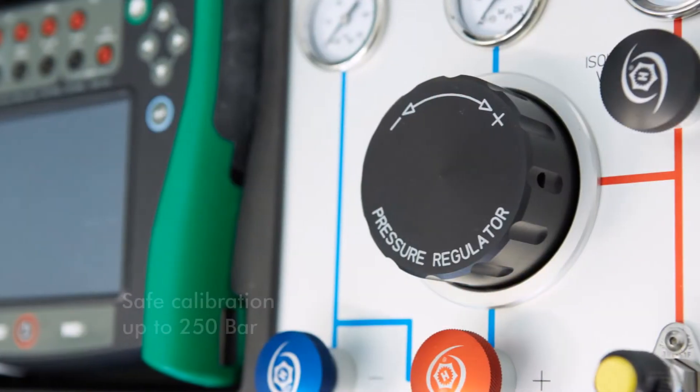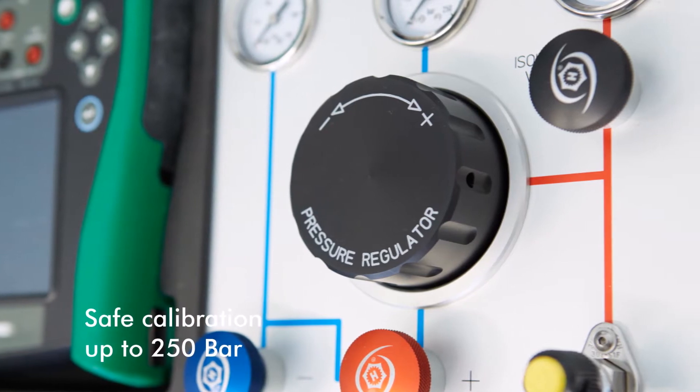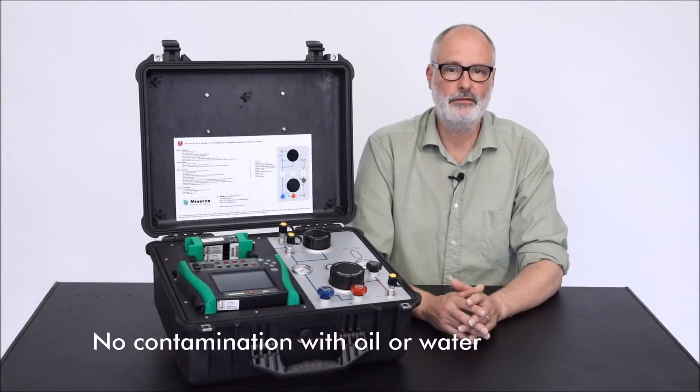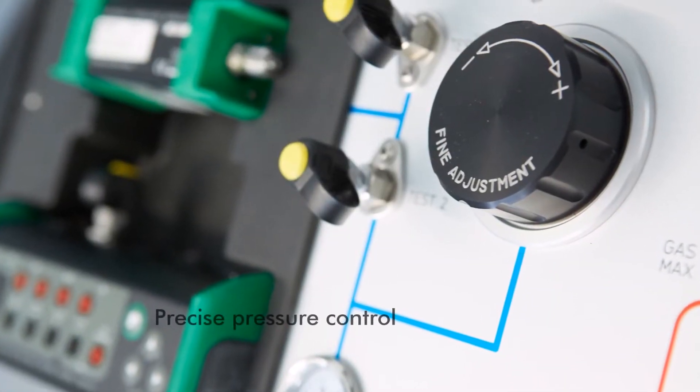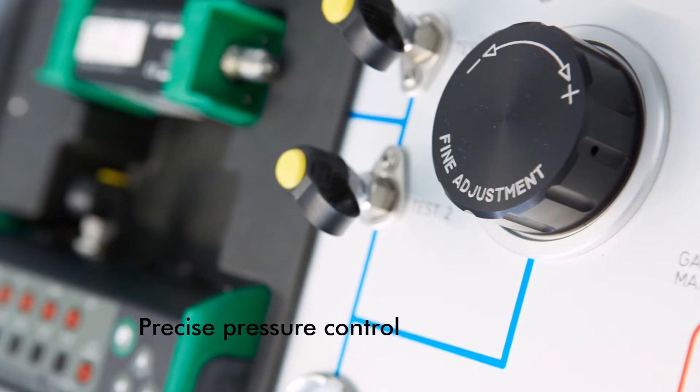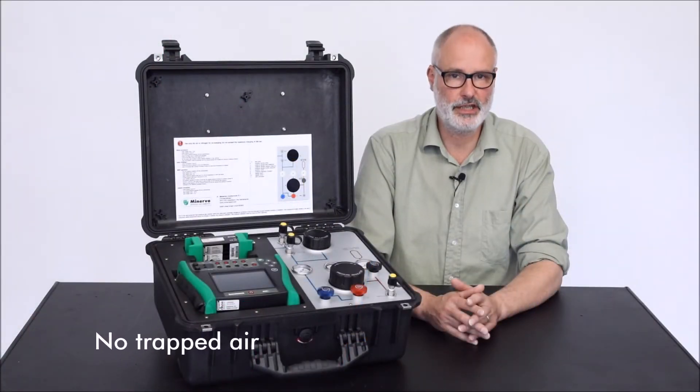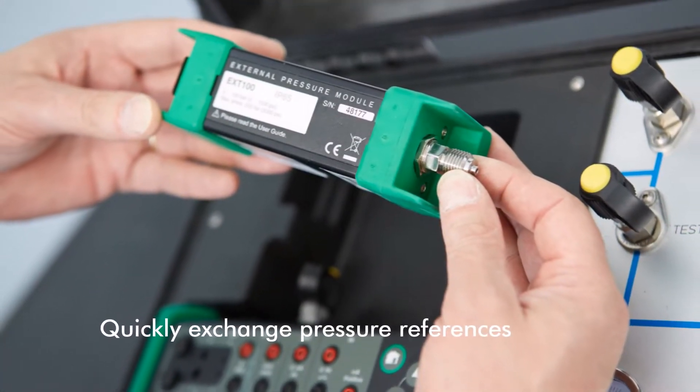It enables you to perform safe pneumatic calibrations up to a maximum pressure of 250 bar, not contaminate the device under test with oil or water, perform precise test pressure control using a pressure balance volume adjuster, eliminate trouble with trapped air in a hydraulic system, and exchange calibrator pressure references quick and easy.